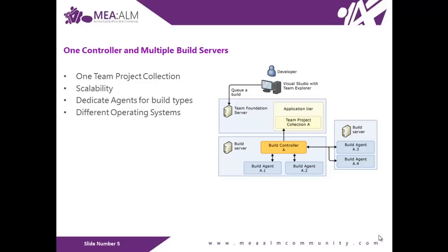What's the major advantage of this topology? Let's say you have different types of projects — projects that compile against the Windows 8 store, which require the Windows 8 operating system. In this case, you may want to have one of the build servers running Windows 8, while the other build server is running Windows 7 or Windows Server 2008. It could be not just the operating system — it could be specific software requirements that need to be installed on one server versus the other.